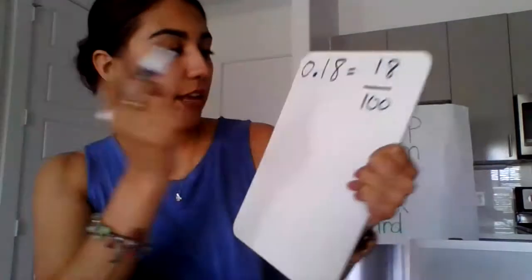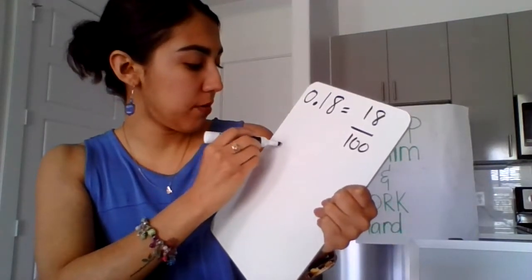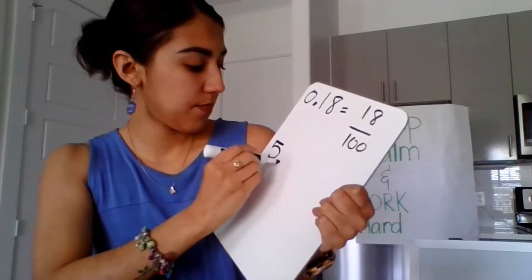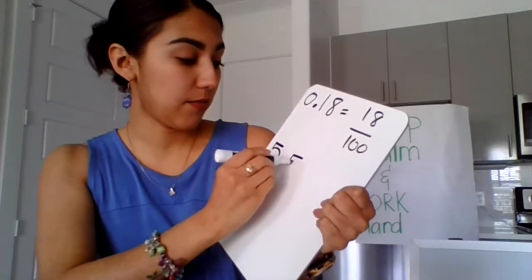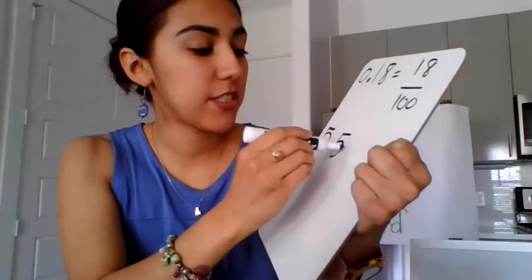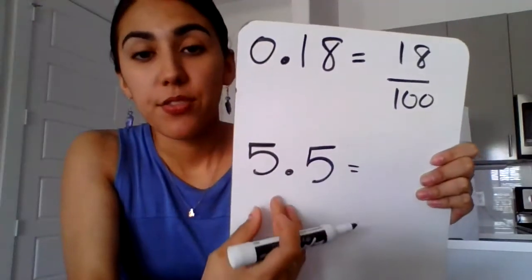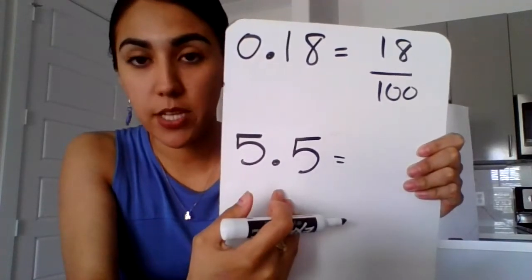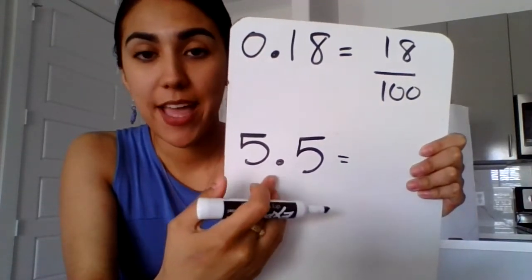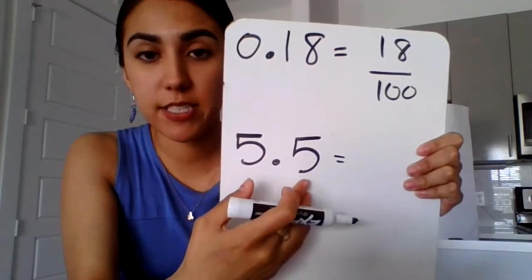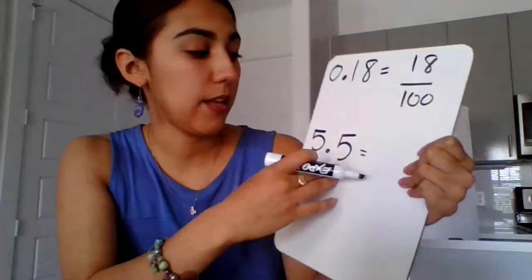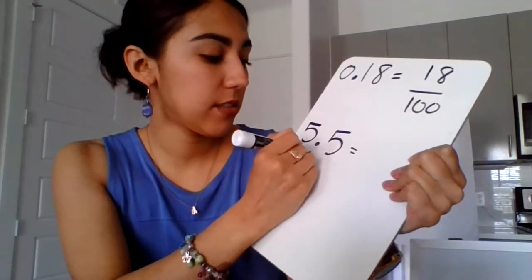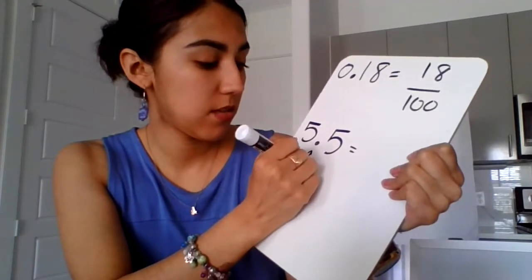The next fraction they have involves a whole number. I think I just gave y'all a hint. So let's read this fraction together. I'm sorry, decimal. They want to know, what is the equivalent fraction to this decimal? Well, let's read this decimal together. 5 and 5 tenths.